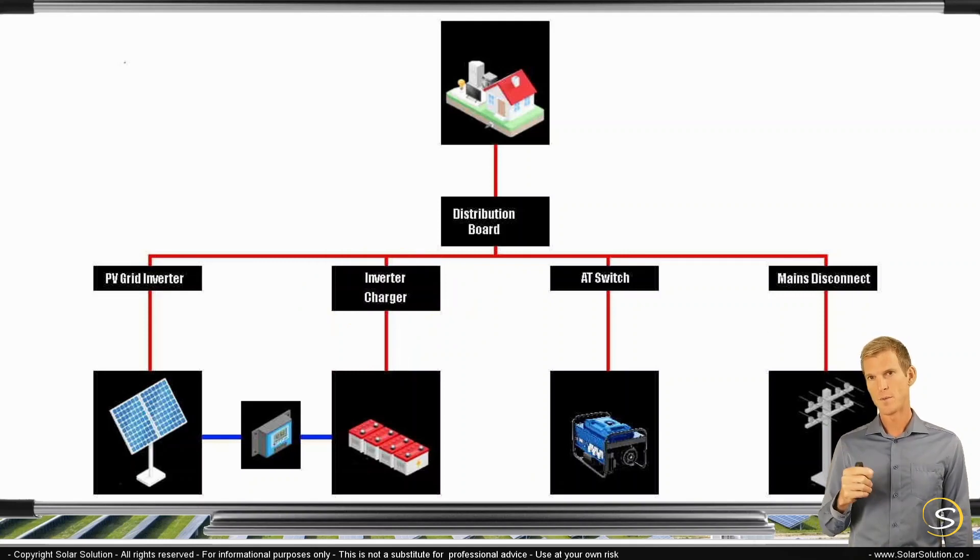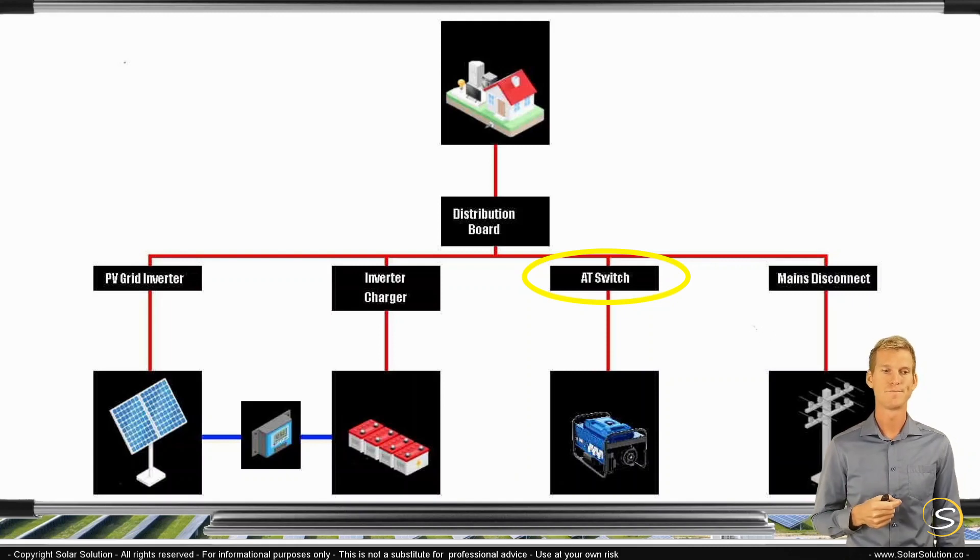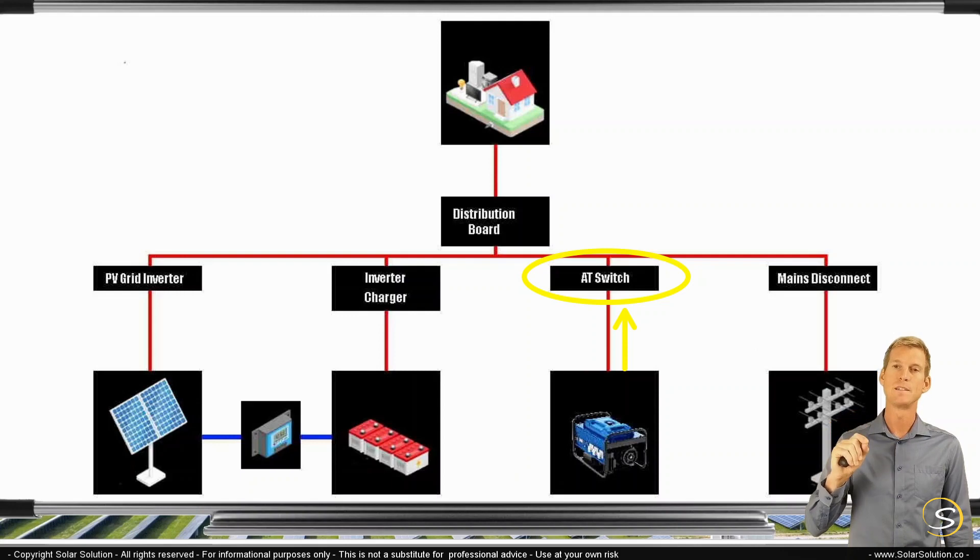Then the next component is the switch on your generator, which could be an automatic transfer switch. So this is an on-off switch, which will allow or not allow the power to flow from your generator into your local AC grid. It can be a very simple switch, a very intelligent switch or a remotely controlled switch.